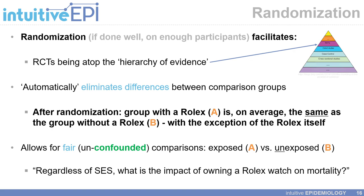Randomization, if done well enough on enough people, facilitates RCTs — randomized controlled trials — being atop the hierarchy of evidence, because randomization automatically eliminates differences between your comparison groups. After randomization, the group with a Rolex is, on average, the same as the group without a Rolex, with the exception of the Rolex watch itself. This allows for fair, unconfounded comparisons and answers the question: regardless of SES, what is the impact of owning a Rolex watch on mortality?